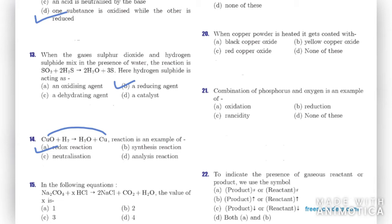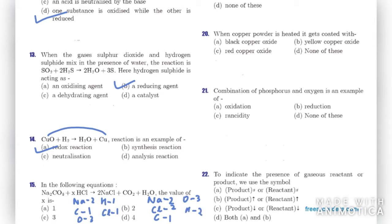Question fifteen: given a reaction, find the value of X by balancing the equation. On the left-hand side: Na=2, C=1, O=3, H=1, Cl=1. On the right-hand side: Na=2, Cl=2, C=1, O=3, H=2. H and Cl are not balanced, so we multiply by 2 on both sides. Therefore X should be 2.